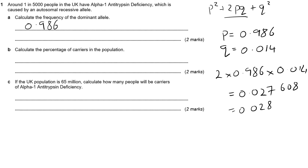Now, this is where you've got to be careful. In the question, it clearly says the answer should be a percentage. That 0.028 is a frequency. So to get it to a percentage, we simply times it by 100, which gives us a value of 2.8%.